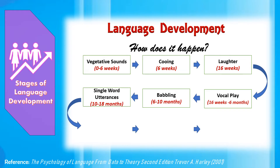Children start producing their first words around the age of 10 or 11 months. These single words are sometimes thought of as forming single-word utterances. Around the age of 18 months, there is a rapid explosion in vocabulary size, and around this time two-word sentences emerge. This vocabulary explosion and the onset of two-word speech are strongly correlated. At this point, children may be learning 40 new words a week.